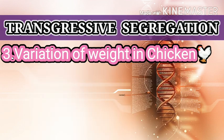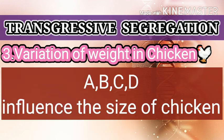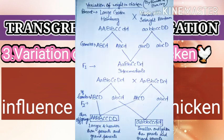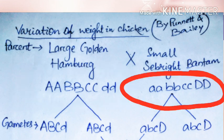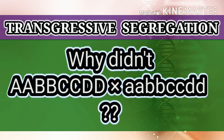Punnett explained that four pairs of multiple genes — capital A, capital B, capital C, and capital D — influence the size of chickens. The large Golden Hamburgs contained three pairs of dominant characters and one pair of recessive alleles: AABBCC dd. Similarly, the smaller Bantam chicken had three pairs of recessive and one pair of dominant genes: aabbcc DD.